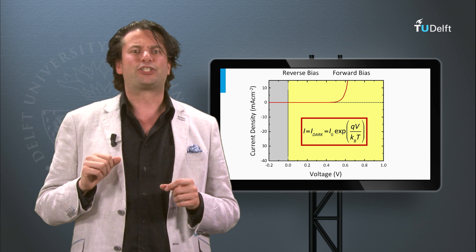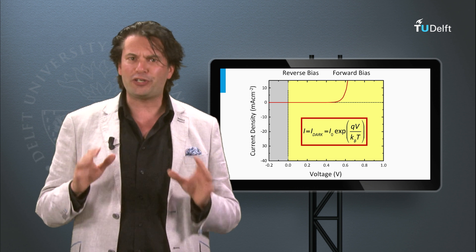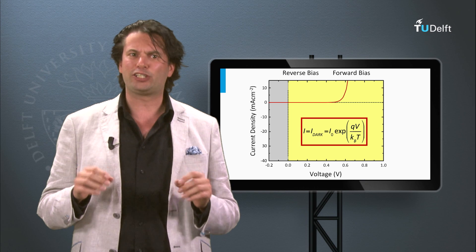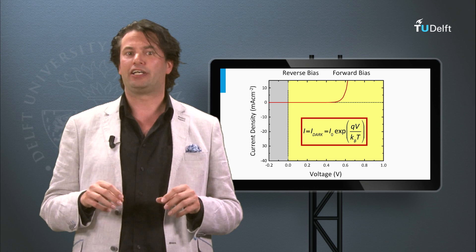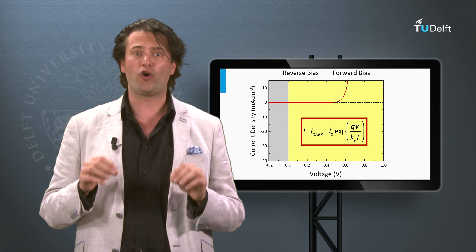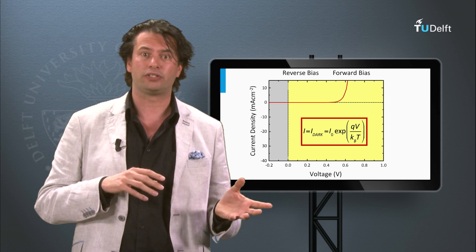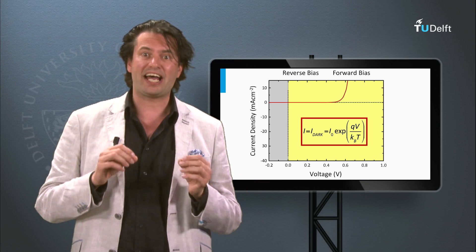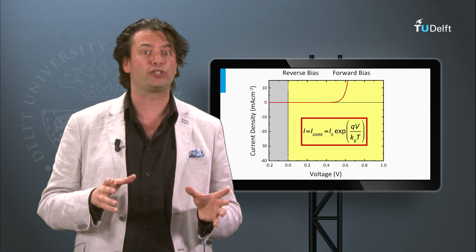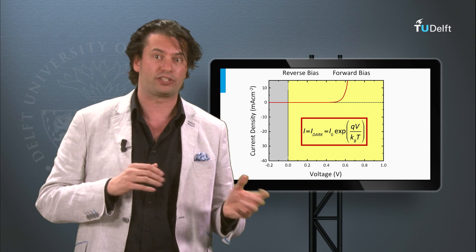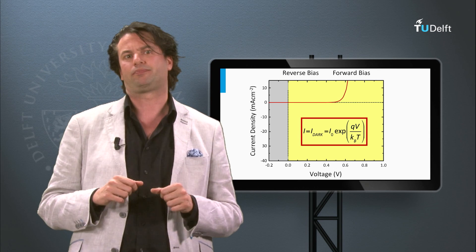Note that the current on the vertical axis is positive if the current flows in the forward direction of the diode, whereas it is negative if it flows in the block direction of the diode.